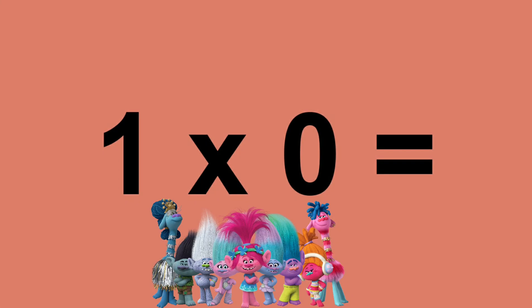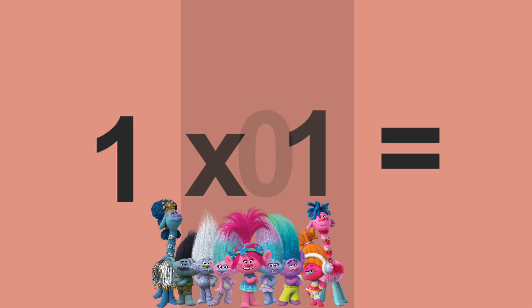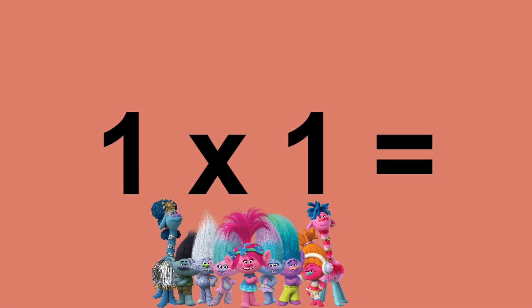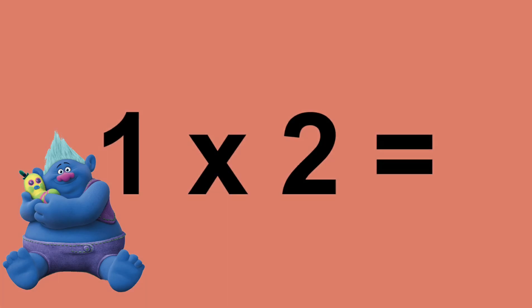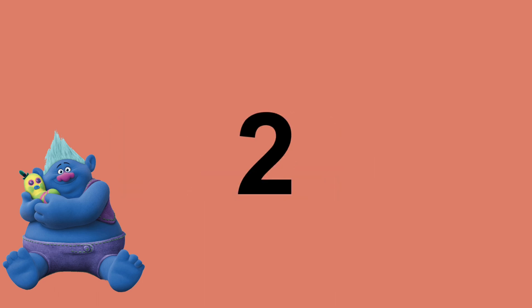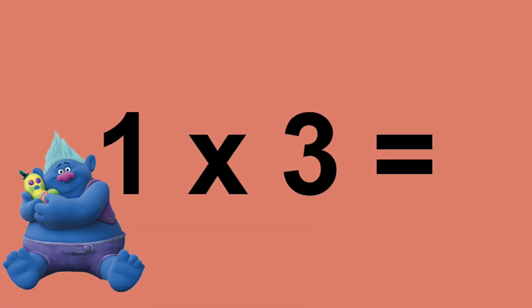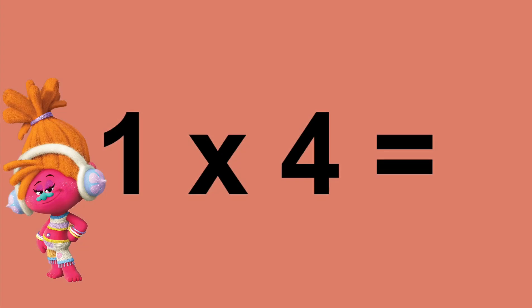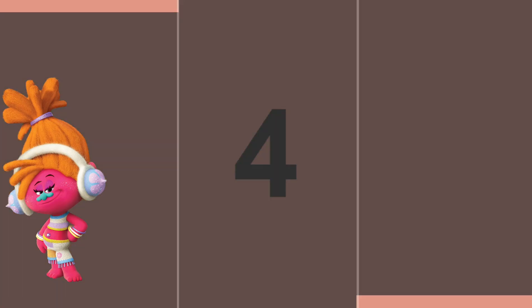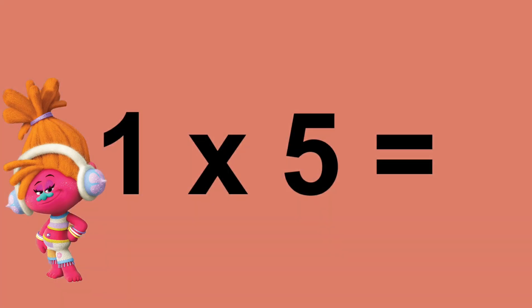One times zero equals zero. One times one equals one. One times two equals two. One times three equals three. One times four equals four. One times five equals five.